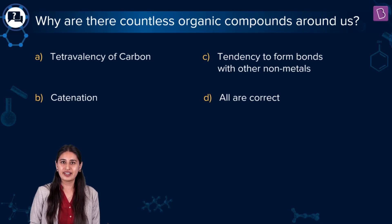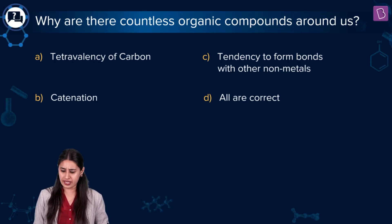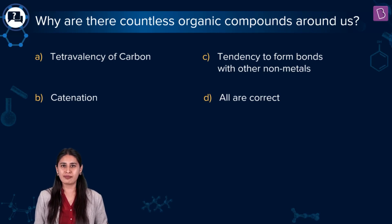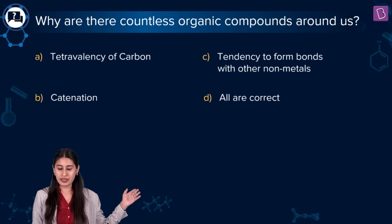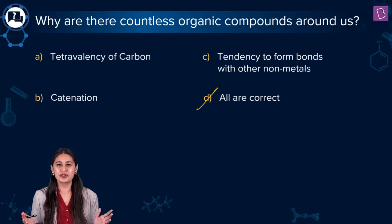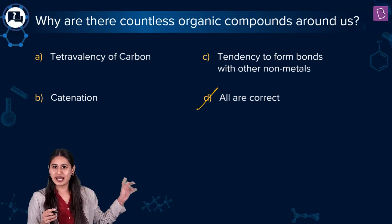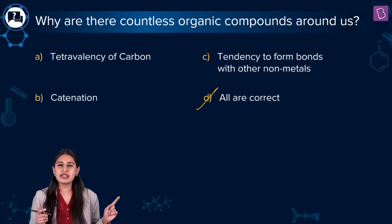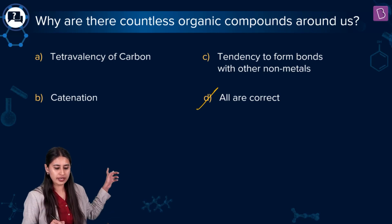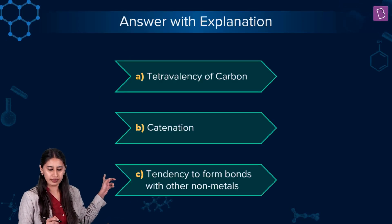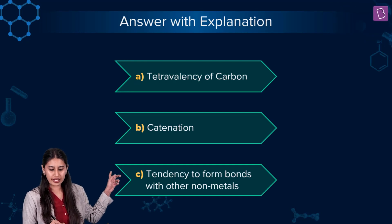This is Class 10, so I'm sure you can all answer this. The right answer is Option D — all of these. Let's now understand options A, B, and C in greater depth. The first one is tetravalency of carbon.